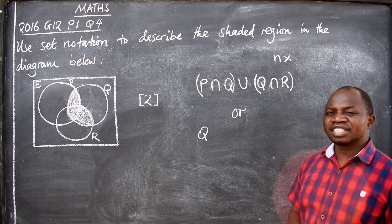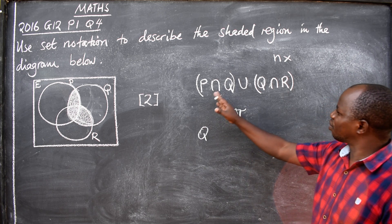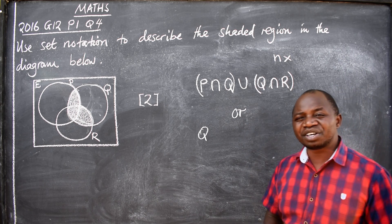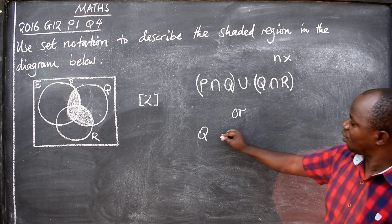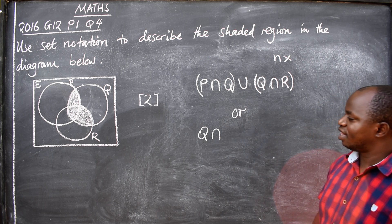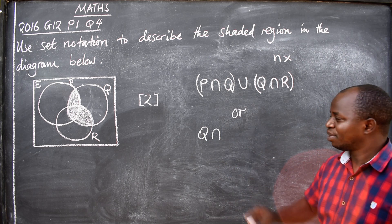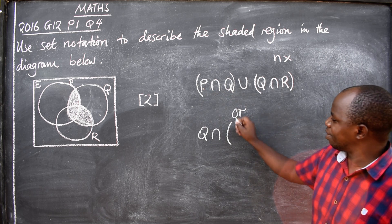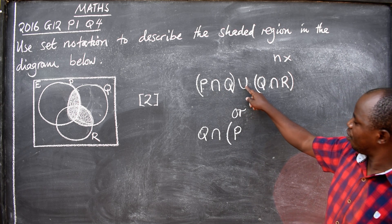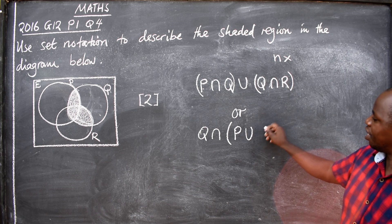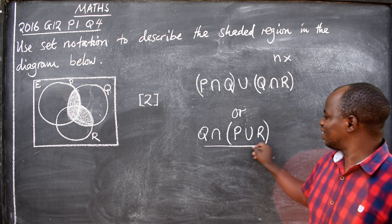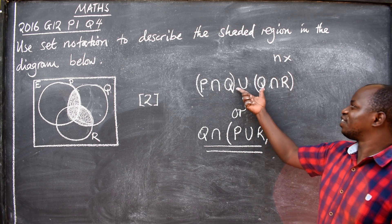What about the symbols, what is common? Is it intersection or union? It is intersection, so we have intersection. These are the two that are common. Open bracket, what will remain here? P, union, what will remain here? R, like this. So you can also write it like that.